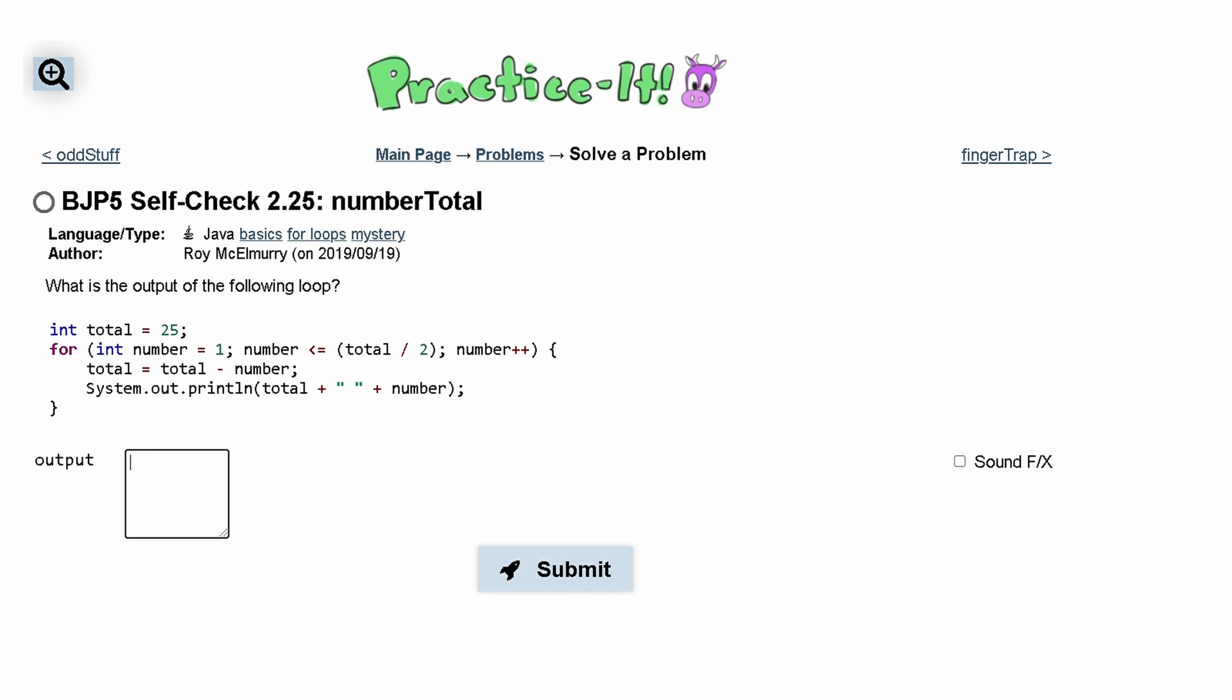So the first iteration of this loop, we can use red. The first time we are going through this loop, total equals total minus number. So our current total is 25 and we subtract 1 from it because 1 is our number. And so we are going to get that our new total is 25 minus 1.